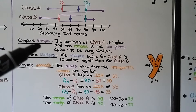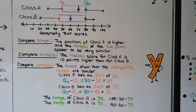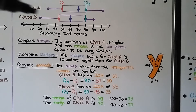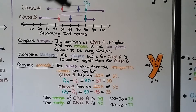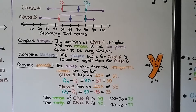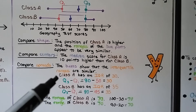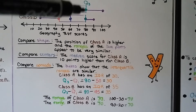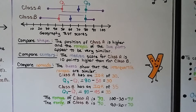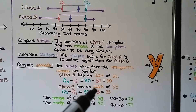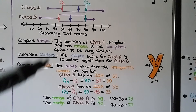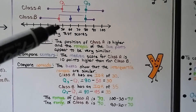Comparing shape, the position of class A is higher, and the ranges of the box plots appear to be very similar. Comparing centers, the median score for class A is 10 points higher — this is a 60, that's a 70 — 10 points higher than for class B. Comparing spreads, the boxes show that the interquartile ranges are similar, going from about 45 or 50 up to 80. Class A has an IQR of 30: Q3 minus Q1 is 80 minus 50, which equals 30. For class B, Q3 minus Q1 is 80 minus 45, giving an IQR of 35.